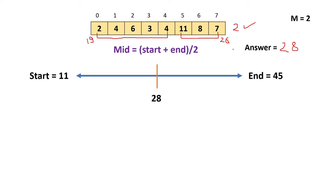There's a chance we can reduce the answer further — maybe 27, 26, or 25 also satisfies the condition. So we shift the end to mid minus 1, making the new end 27. Then the new mid is (11 + 27) / 2 = 19. We now check using 19 as the threshold.